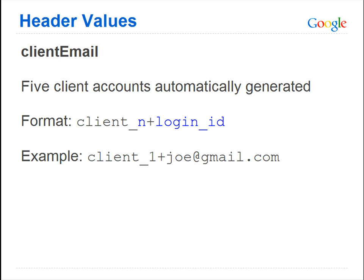The key difference between requests made to production and Sandbox are the header values. The Sandbox automatically generates five client accounts based on the Google account you chose to log in with. The format of these account emails is client underscore n, where n is a number one through five, plus login ID, where login ID is the login of the Google account you used during authentication. So for example, if you logged in using joe at gmail dot com, one of your client accounts would be client underscore one plus joe at gmail dot com.